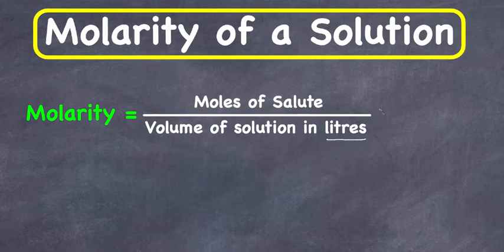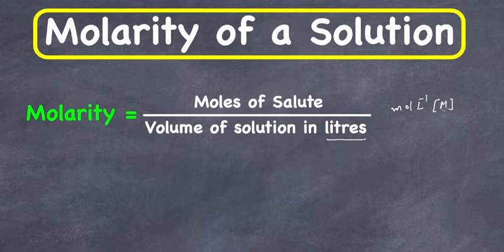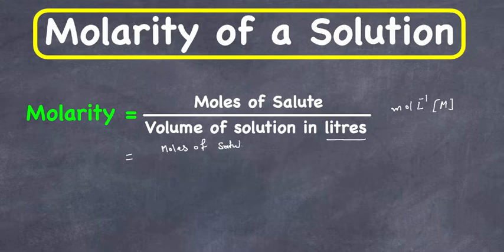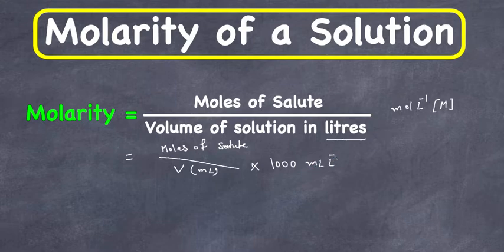The unit of molarity is moles per liter, which can also be written as a capital M. If the volume is given in milliliters, then molarity equals moles of solute divided by volume in milliliters, multiplied by 1000 (milliliters per liter), which gives us the unit of molarity again in moles per liter.